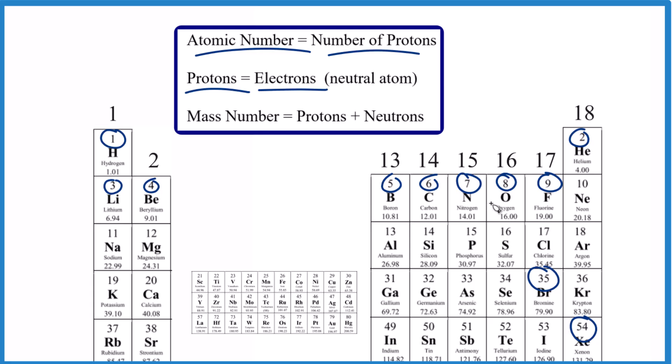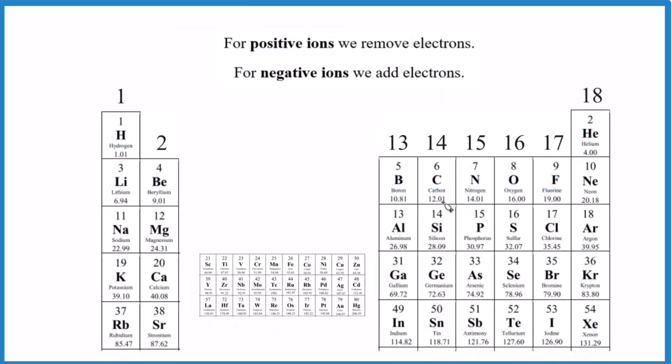But what about ions? They're a bit different. So say you're given a positive ion like sodium, Na plus. How many total electrons? Well, you know that you have 11 protons and 11 electrons for just sodium.